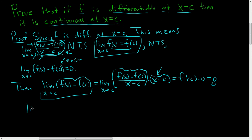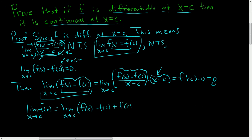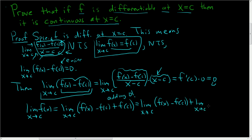So we've shown that this limit is equal to 0. To finish, we'll take the limit as x approaches c of f of x. This equals the limit as x approaches c of f of x minus f of c plus f of c — adding 0 is a really common technique in calculus proofs. So this is the limit as x approaches c of f of x minus f of c, plus the limit as x approaches c of f of c. This first limit is 0, which we just proved, and f of c is a constant, so this is just f of c.